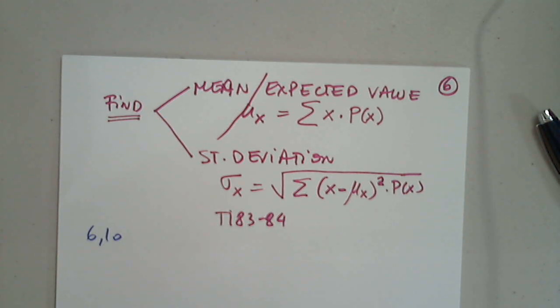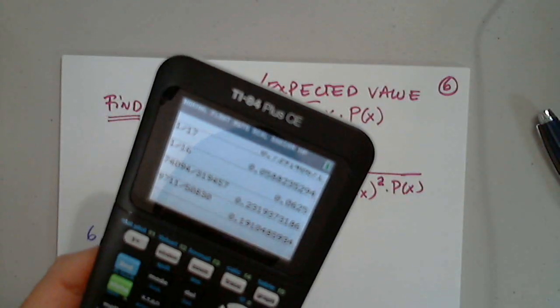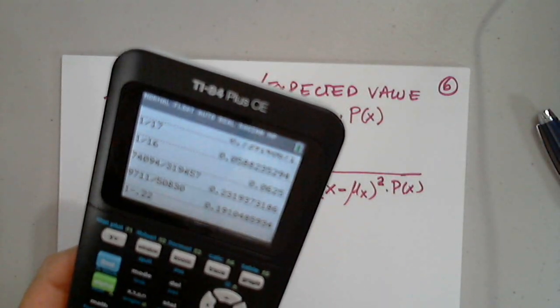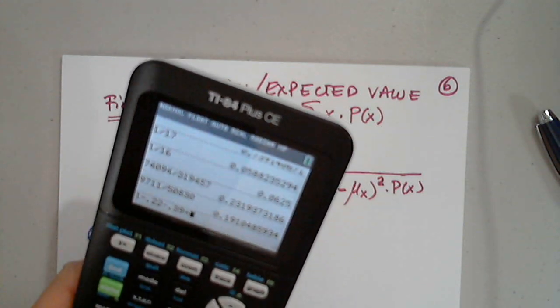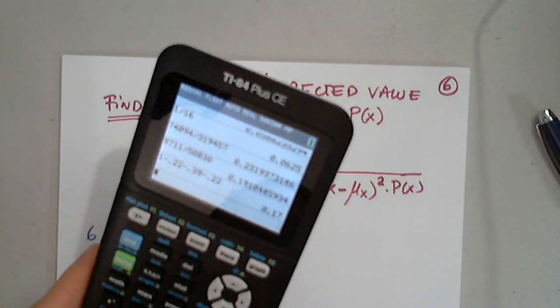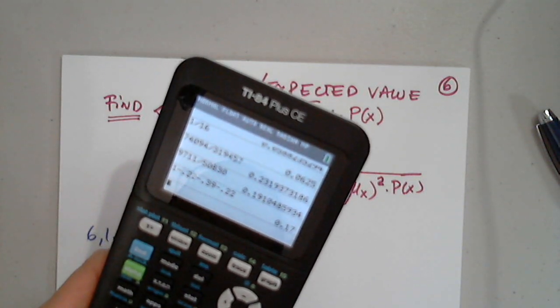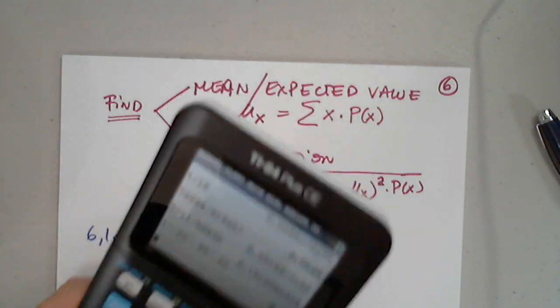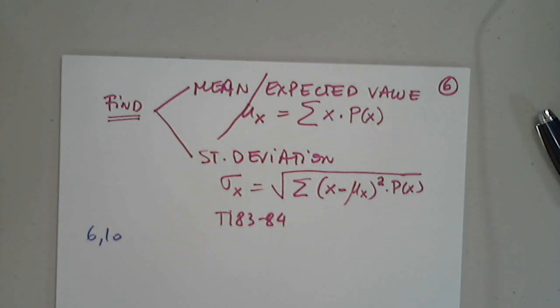Determine the required value of the missing probability to make the distribution a discrete probability. Okay. Very good. So all probabilities have to be between 0 and 1 and they have to add up to 1. So from 1, we subtract the rest. 1 minus 0.22 minus 0.39 minus 0.22. And I get 0.17. Type an integer or a decimal. 0.17.